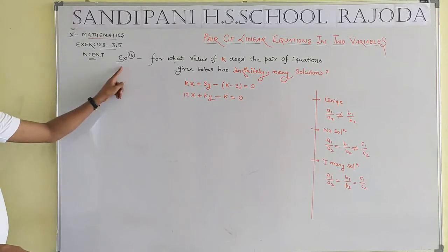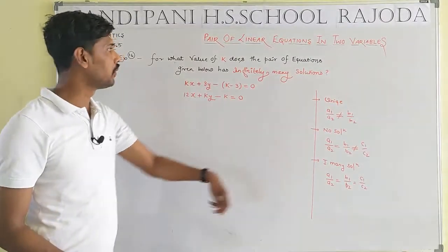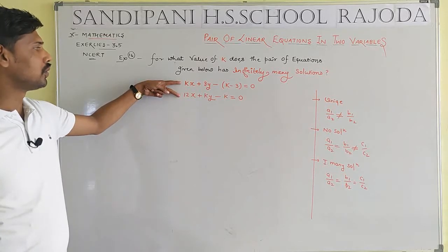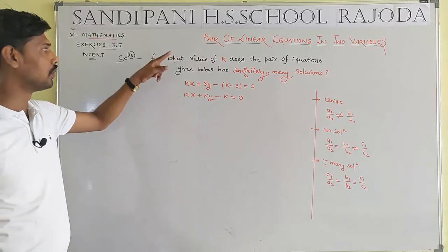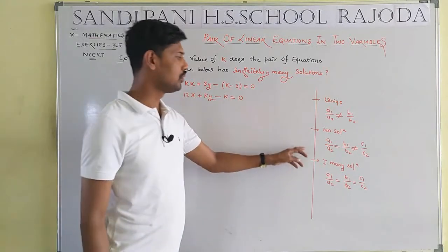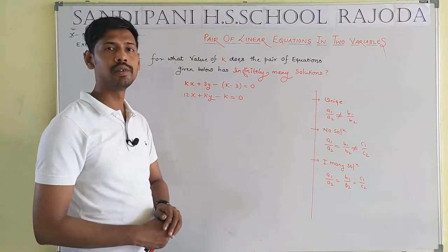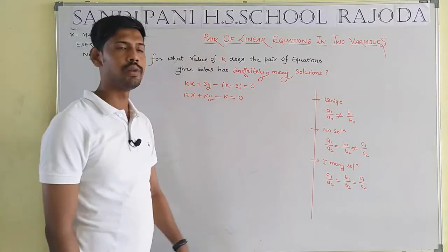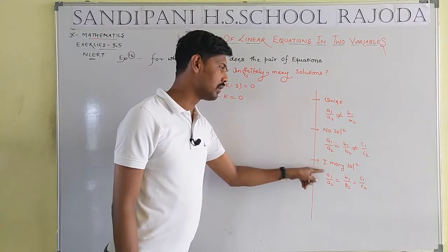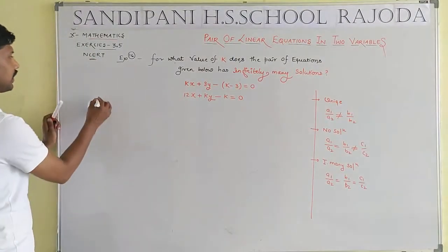Now we take Example number 16. For what value of k does the pair of equations kx plus 3y minus k minus 3 equals 0, and 12x plus ky minus k equals 0, have infinitely many solutions? There are three types: unique solution — a1/a2 not equal to b1/b2; no solution — both ratios equal; infinite many solution — a1/a2 equals b1/b2 equals c1/c2.